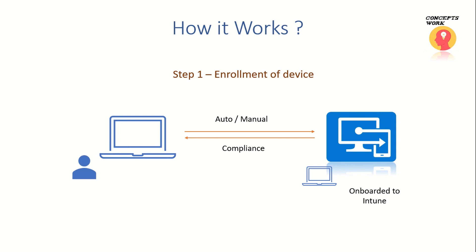Now since we know how device compliance policies work in a nutshell, step number one will always be getting the device enrolled. Once the device is enrolled and onboarded to Intune, Intune will go ahead and verify whether the device is compliant or not depending upon the set of information it receives from the device. Let's see everything in action now, starting from configuring the notification settings for a specific policy.